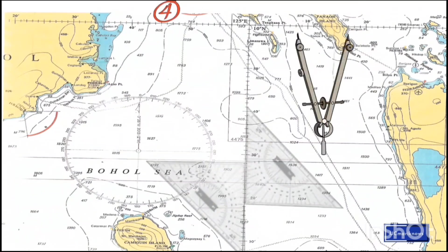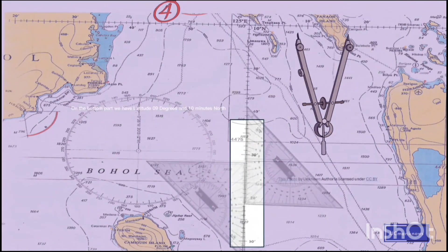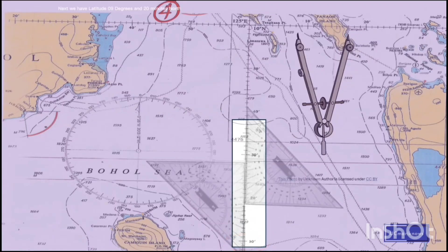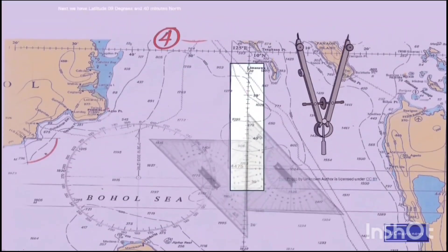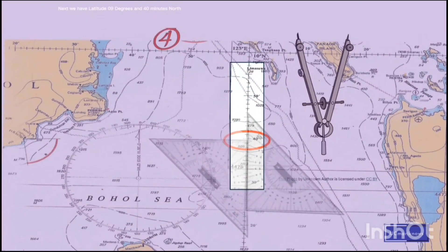Let's locate our latitude using a pair of dot triangles by positioning it in line with the parallel of latitude. On the bottom part we have latitude 9 degrees 10 minutes north, next 9 degrees 20 minutes north, next 9 degrees 30 minutes north, and next 9 degrees 40 minutes north.